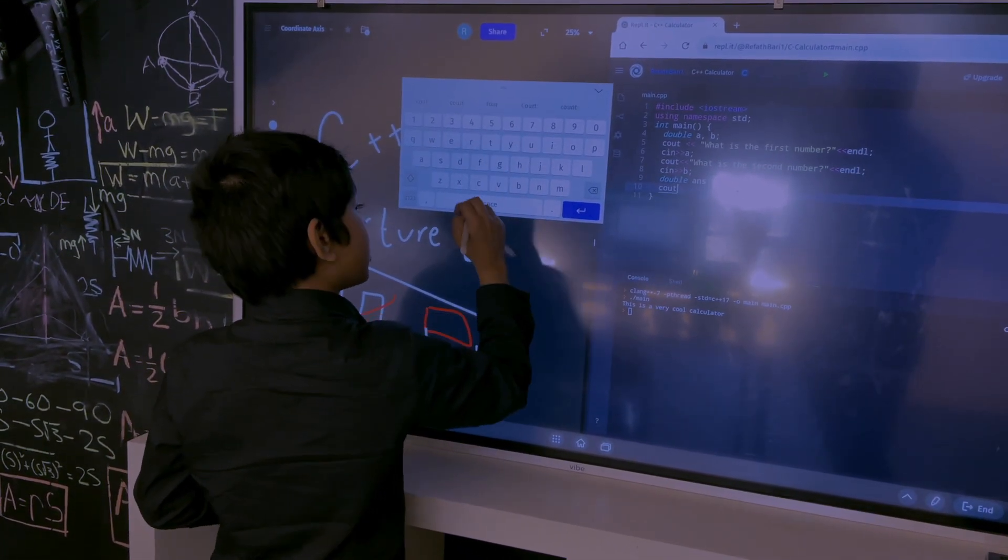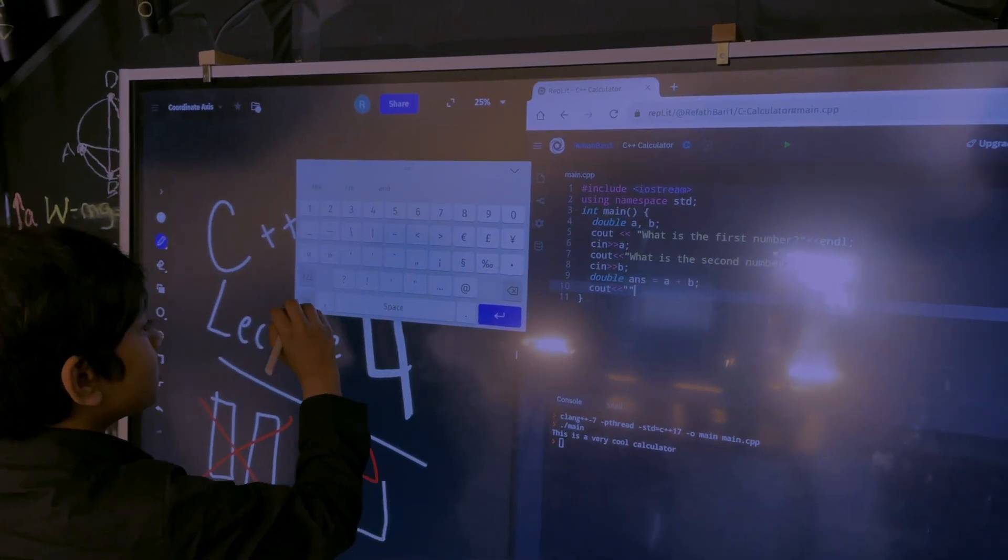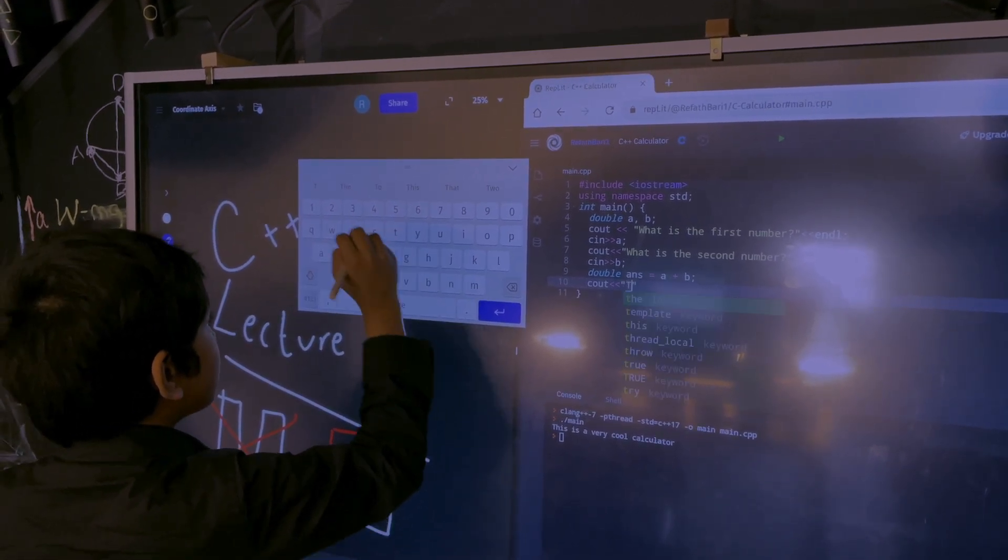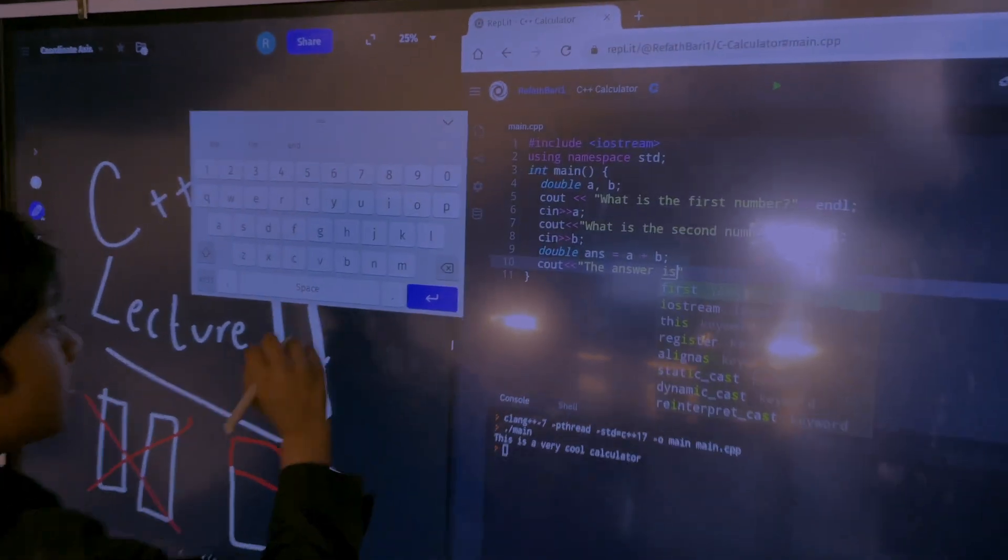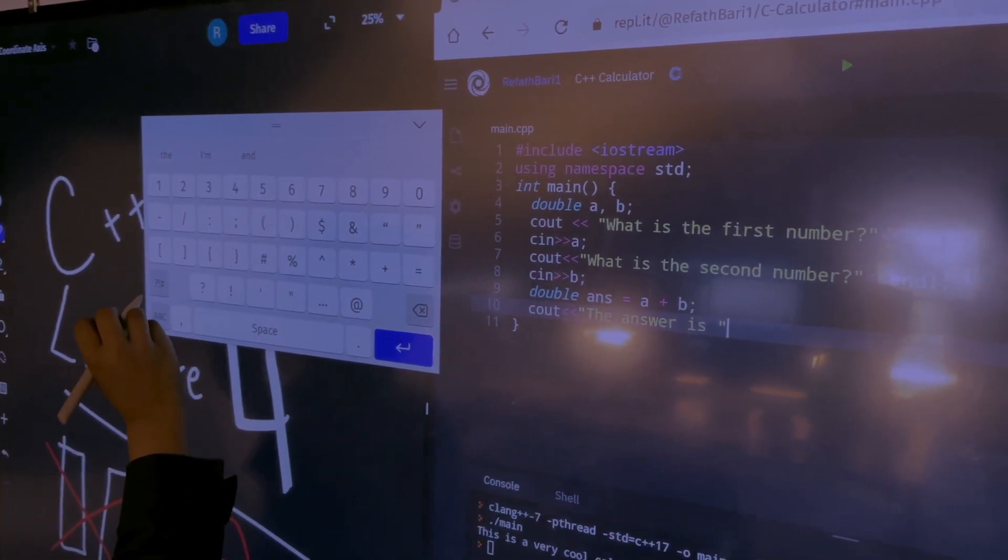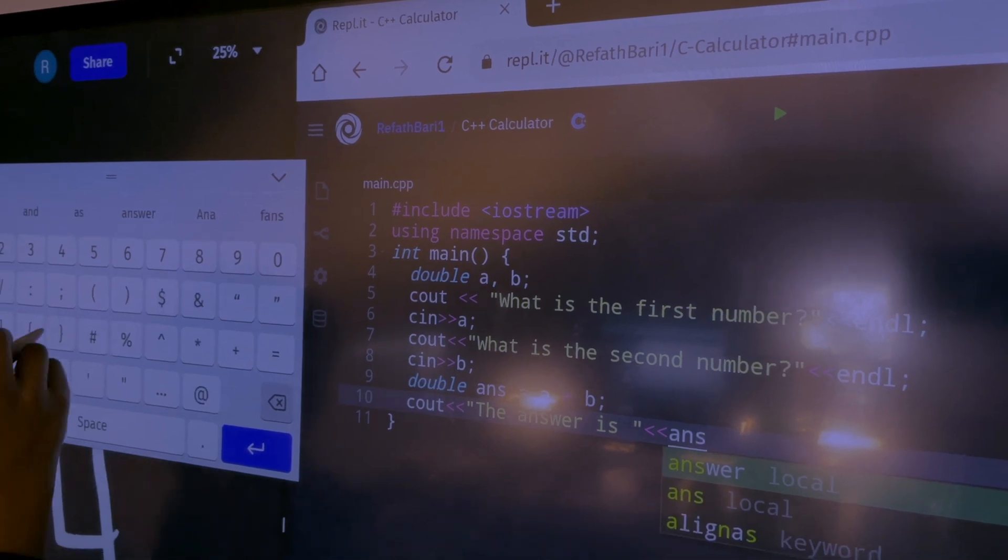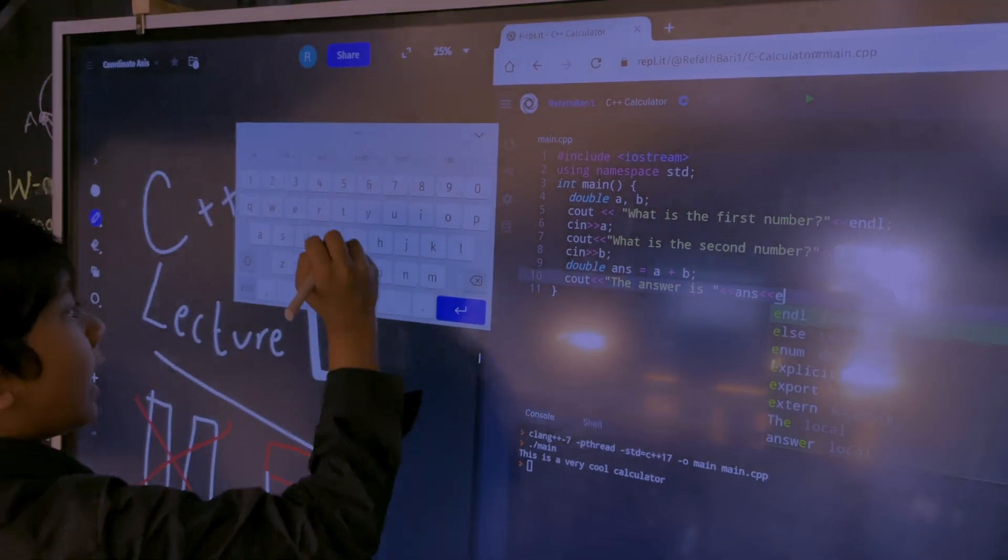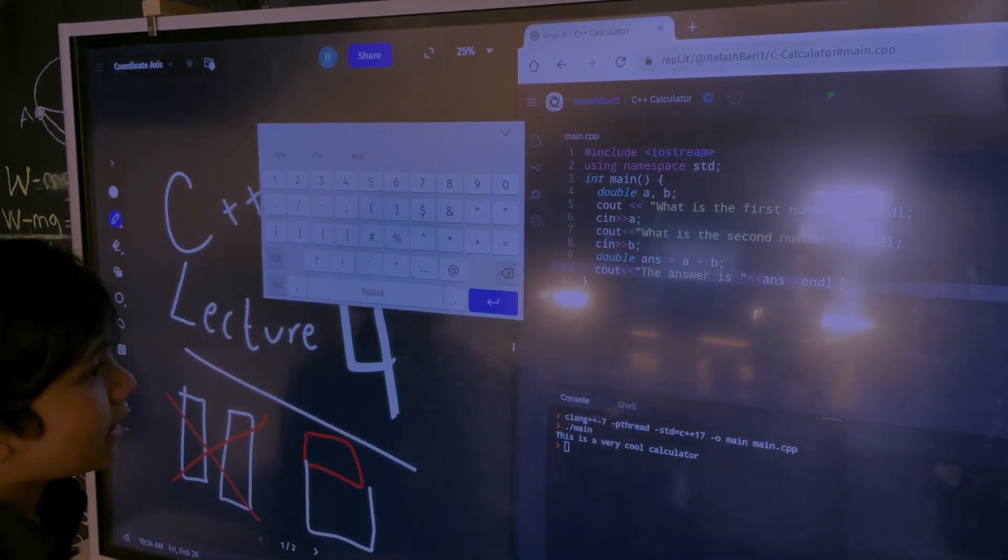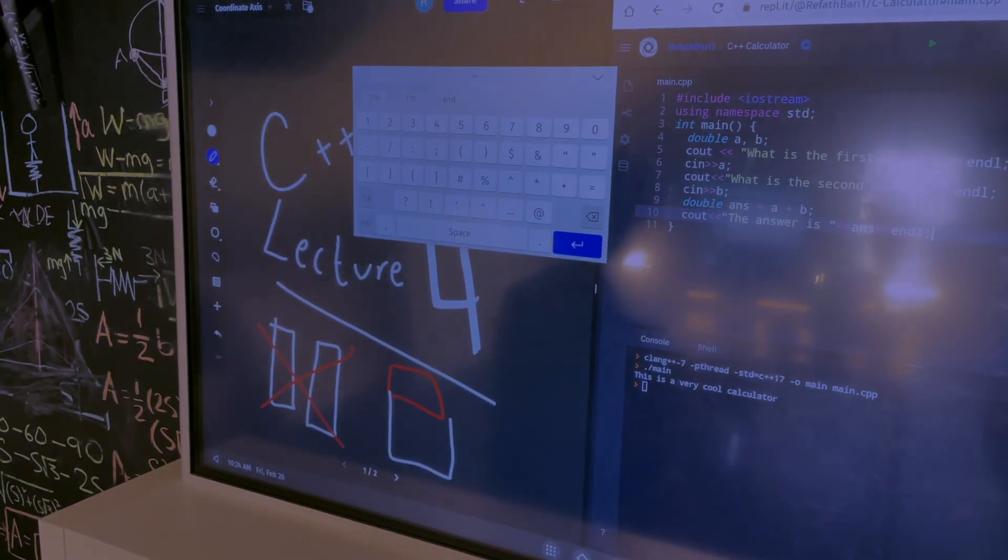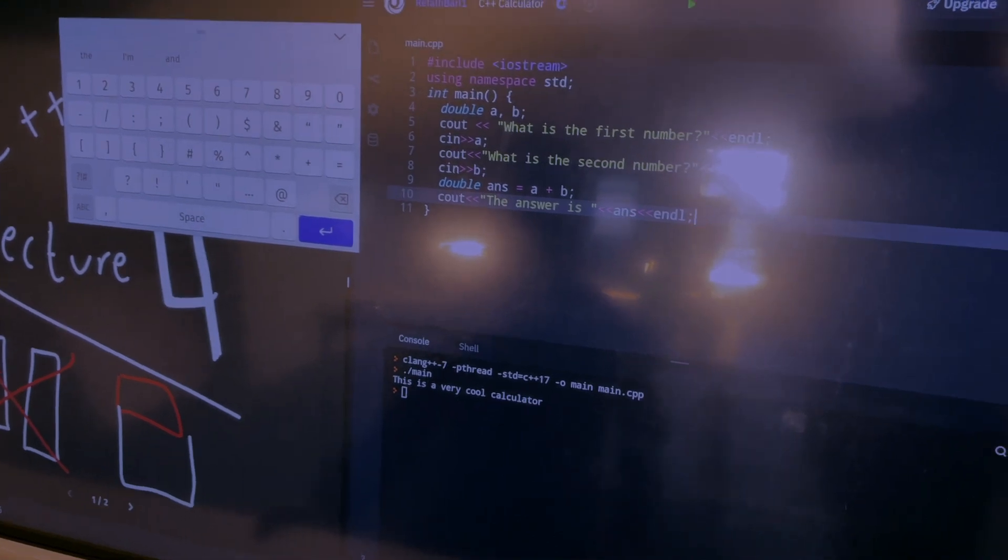And then, it's going to print out our answer. Cout the answer is. And then, when we end the quotation marks and put ans. And then, we put the operators. And endl. Wow. Navigating these tabs. Not used to typing on phone. So the answer is ans.